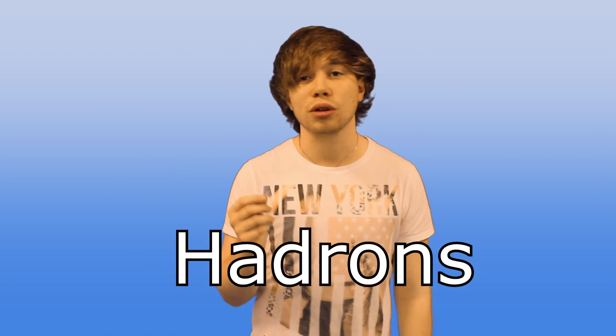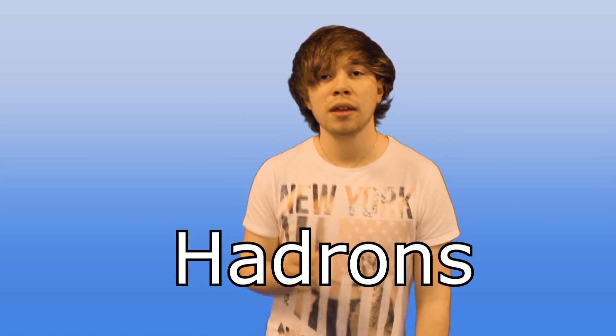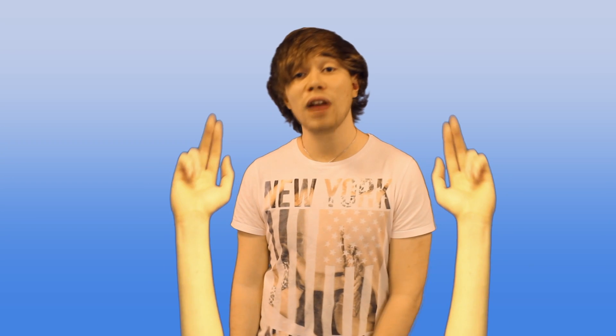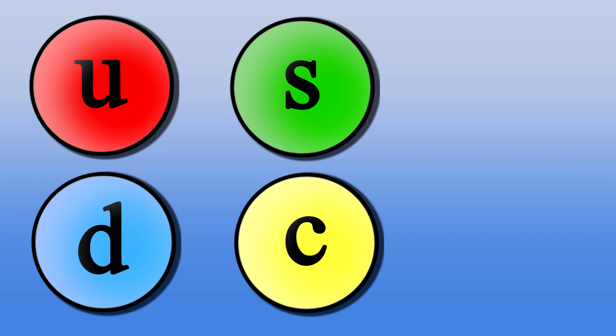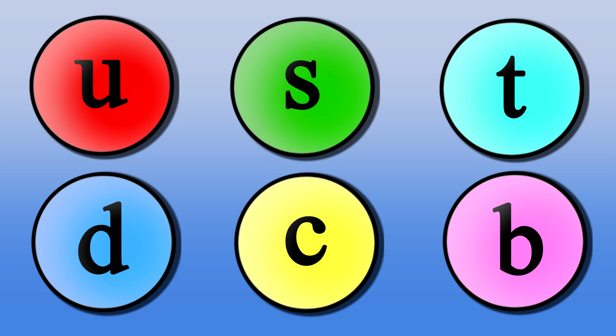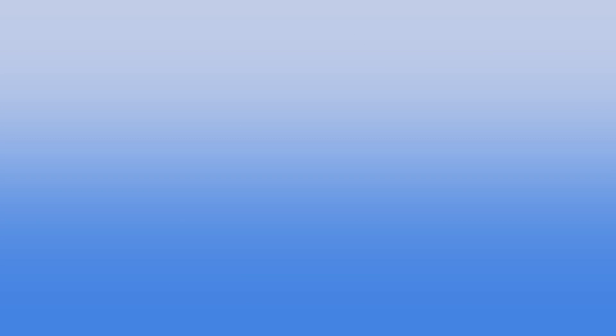Quarks are believed to be the basic building blocks of neutrons, protons and a variety of other particles known as hadrons. There are six different types or flavours of quarks: up, down, strange, charm, top and bottom. Each with their own individual properties.